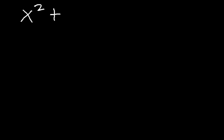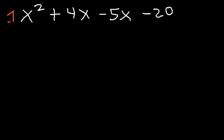In this video we're going to go over factoring by grouping, particularly when we have four terms. Let's begin with an example: the polynomial x squared plus 4x minus 5x minus 20. Look at the coefficients of the first two terms and the last two — 4 divided by 1